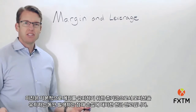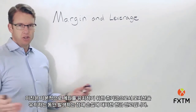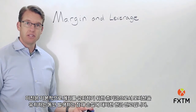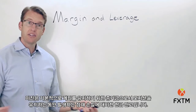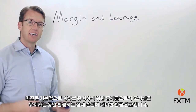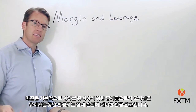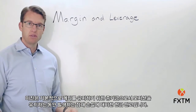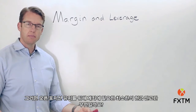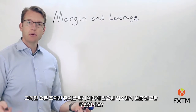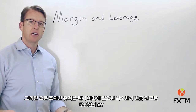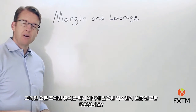Margin is basically a good faith deposit that you have available in your account — equity in your account, cash in your account — against potential losses when you're holding a position. So what is the minimum required amount of equity or cash that I need to have in my account in order to hold open a position?